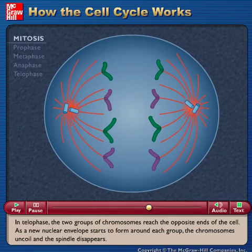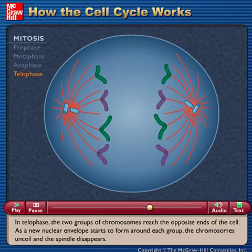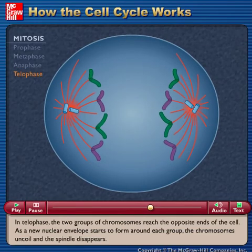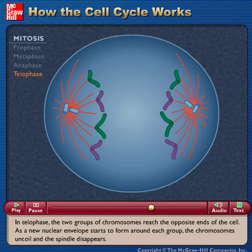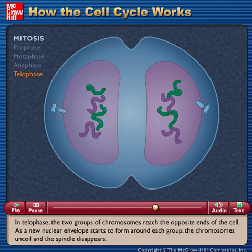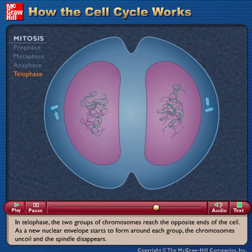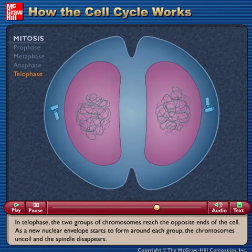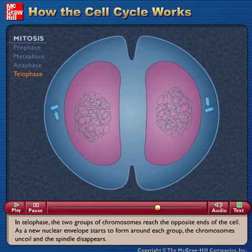In telophase, the two groups of chromosomes reach the opposite ends of the cell. As a new nuclear envelope starts to form around each group, the chromosomes uncoil and the spindle disappears.